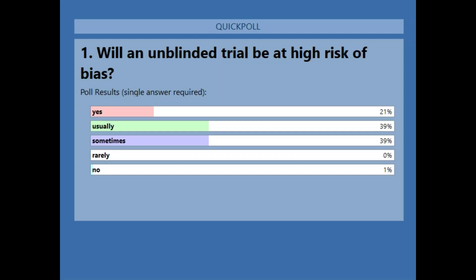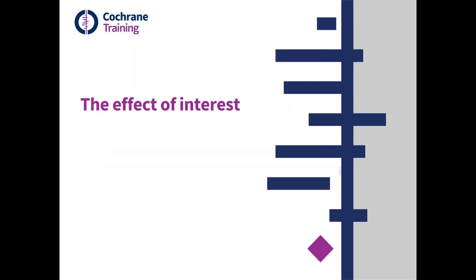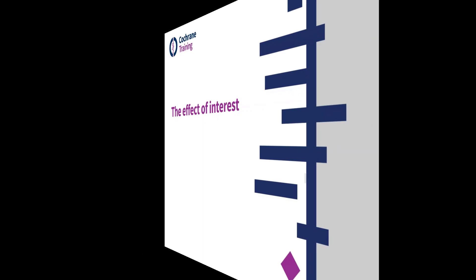Our answer is 'sometimes.' This is a big change from version 1 of the risk of bias tool, where high risk of bias was generally equated with participants and trial personnel not being blinded. It is not the default in ROB2 that unblinded trials are considered to be at high risk of bias. Unblinded trials may be at high risk of bias — sometimes — depending on deviations from intended intervention that we will describe later during this webinar.